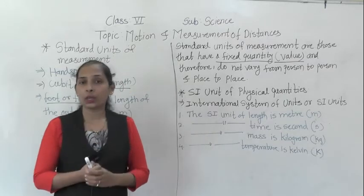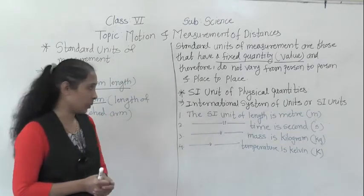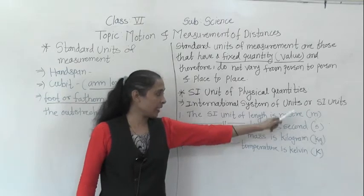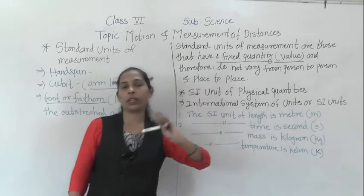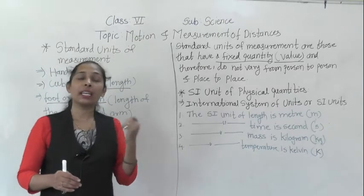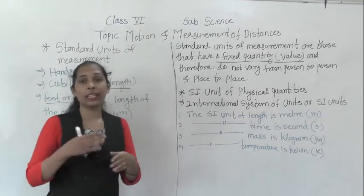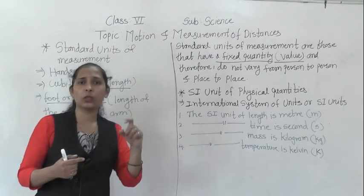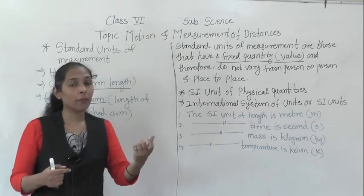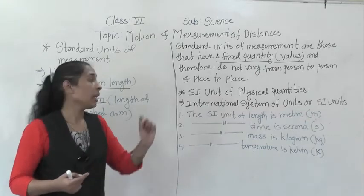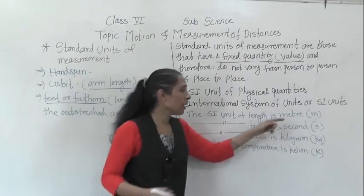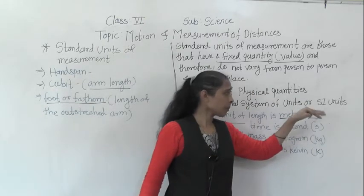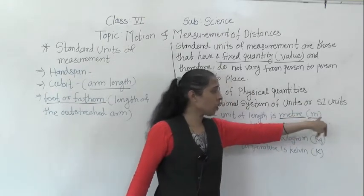Let's look at some physical quantities and their SI units. The SI unit of length is the meter, denoted by the small letter m. If the length is very small we can use millimeter or centimeter, and for large distances we can use kilometer. But the SI unit of length is the meter.